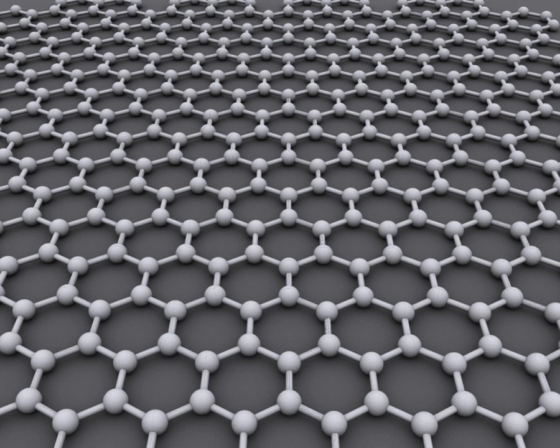Graphene is an allotrope of carbon consisting of a single layer of carbon atoms arranged in a hexagonal lattice. It is a semimetal with small overlap between the valence and conduction bands — a zero bandgap material. It is the basic structural element of many other allotropes of carbon, such as graphite, diamond, charcoal, carbon nanotubes and fullerenes.